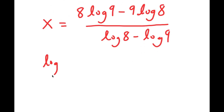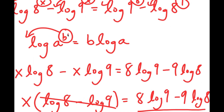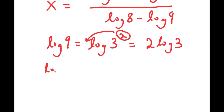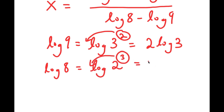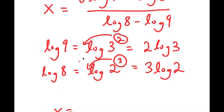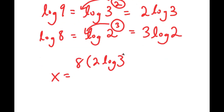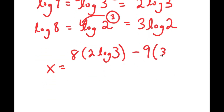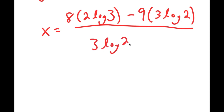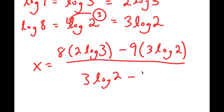Now, log of 9 we can simplify to log of 3 squared, and I can move 2 to the front, so this equals 2 times log 3. I can do the same thing for log 8: log 8 is equal to log of 2 to the power of 3, and moving 3 to the front gives 3 times log 2. So from here, I get x is equal to 8 times 2 log 3 minus 9 times 3 log 2, all over 3 log 2 minus 2 log 3.